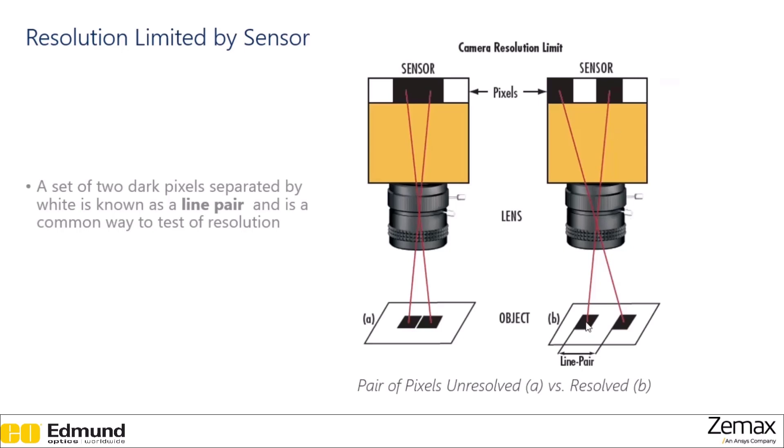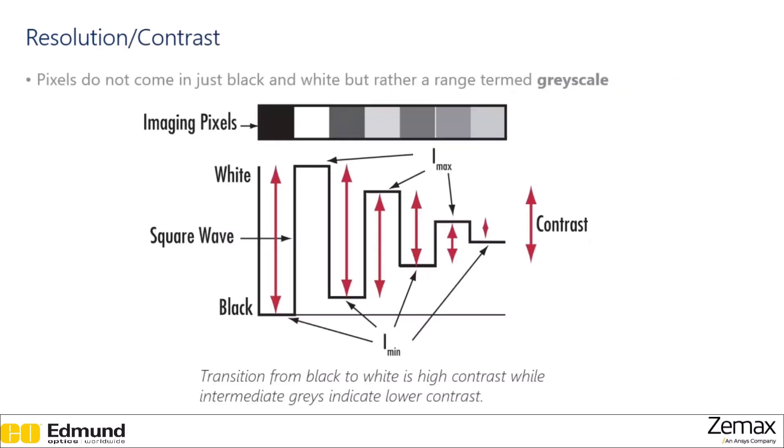So over on the right here, we have an example where there is a larger white gap between the line pair, and so the information ends up on separate pixels with another pixel in between them, which is white, which means this information is resolved. So line pairs is a common way to specify your resolution of an optical system, essentially saying what is the spacing of two dark pixels that we can resolve. Now it's a little more complicated than just saying black and white, because pixels come in grayscale. So instead of black, white, black, what we really end up with is dark, less dark, more dark. So depending on what that contrast is, we can either say they are resolved or not.